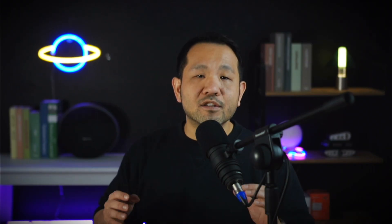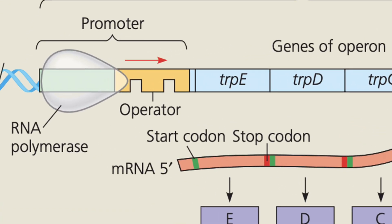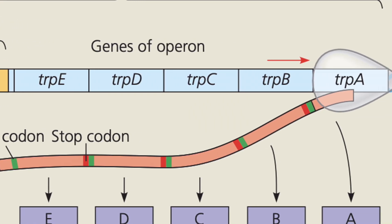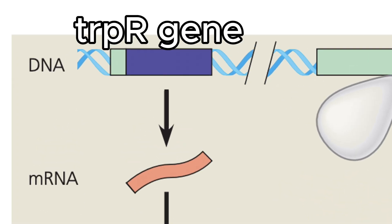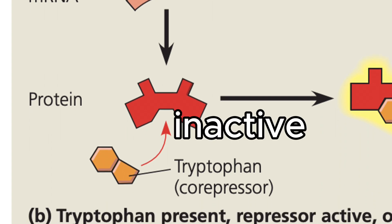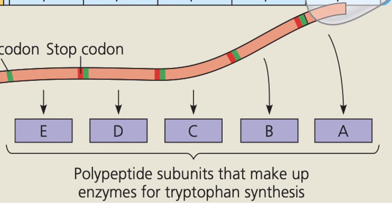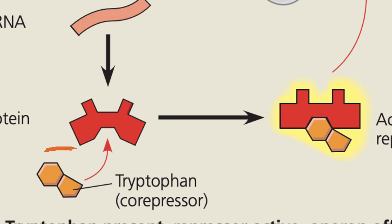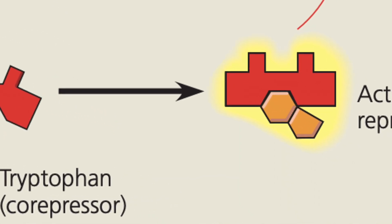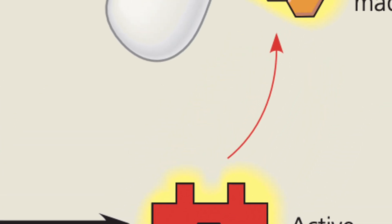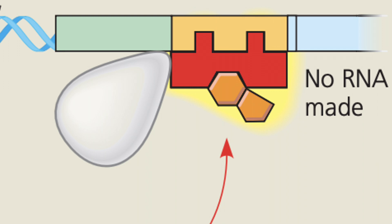The trp operon looks very similar to the lac operon — with a promoter, an operator, and five structural genes in the cluster. The major difference is the repressor protein. The trp R gene, elsewhere in the chromosome, produces a trp repressor that is made in its inactive state. Without any particular stimulus, the repressor leaves the operator alone, allowing regular transcription and translation of the enzymes involved in tryptophan biosynthesis. But when tryptophan concentration is high, tryptophan molecules bind to the trp repressor's allosteric site, changing it into an active form that sits at the operator and stops enzyme production. This slows tryptophan biosynthesis down to a reasonable level. Because the operator is normally unaffected but can be repressed, the trp operon is a classic example of a repressible operon.